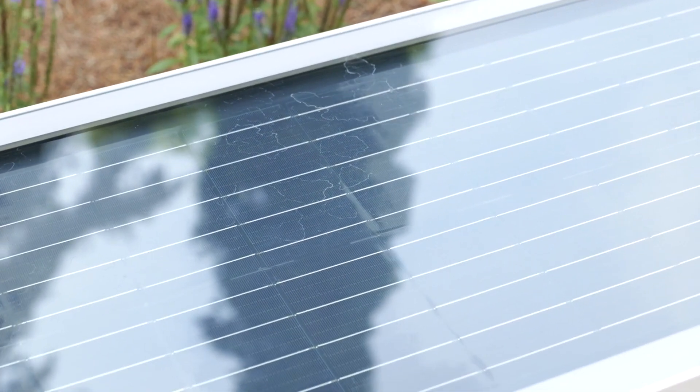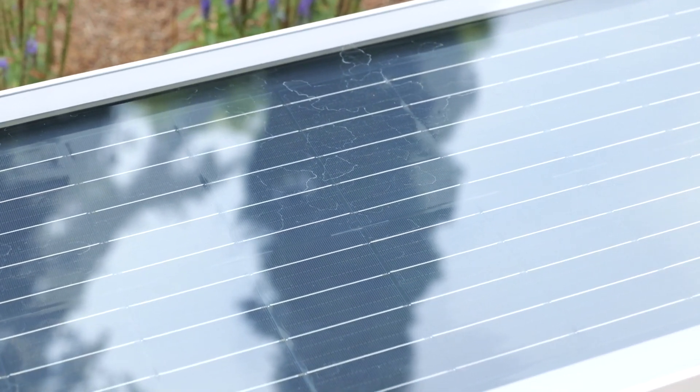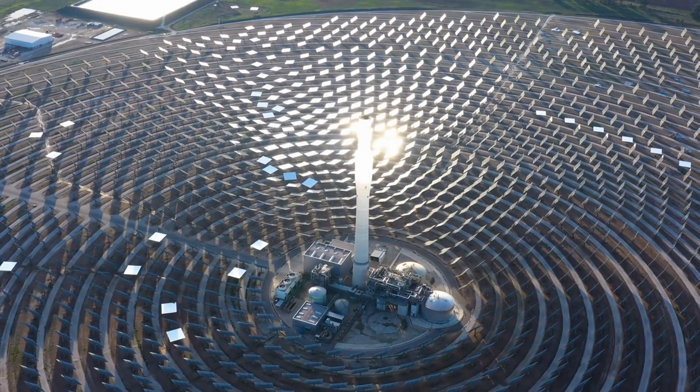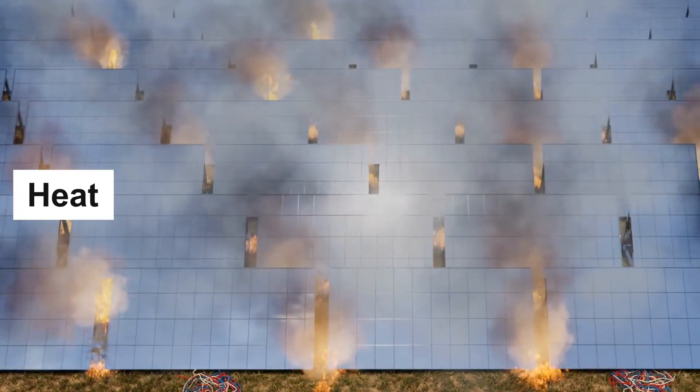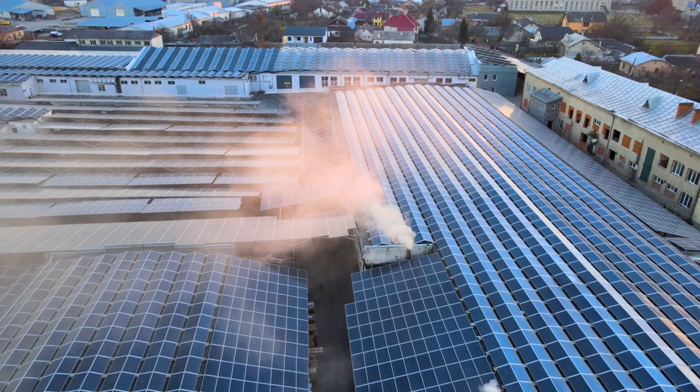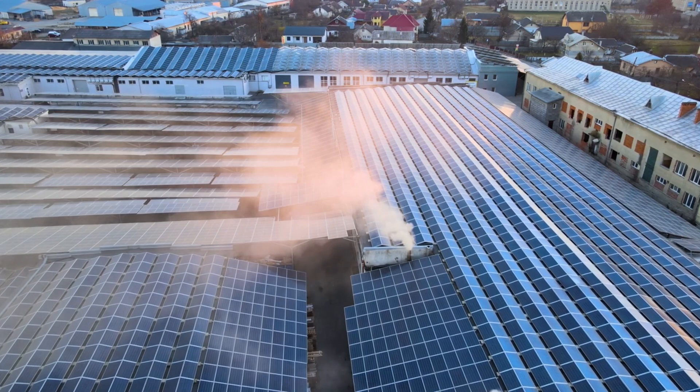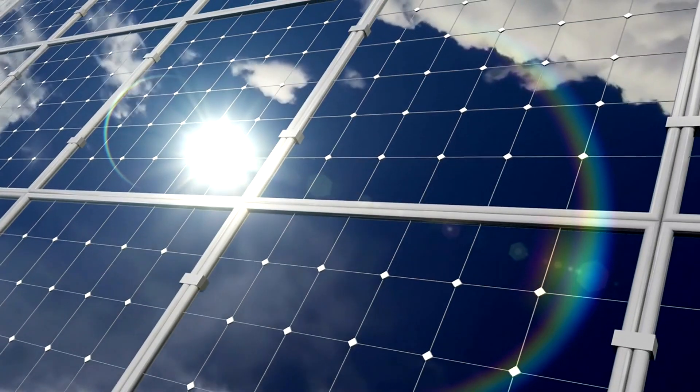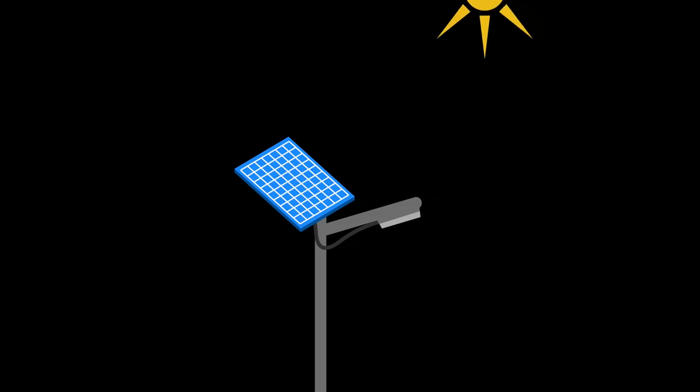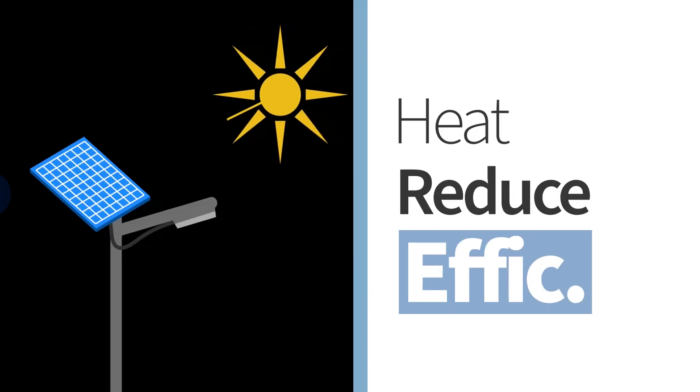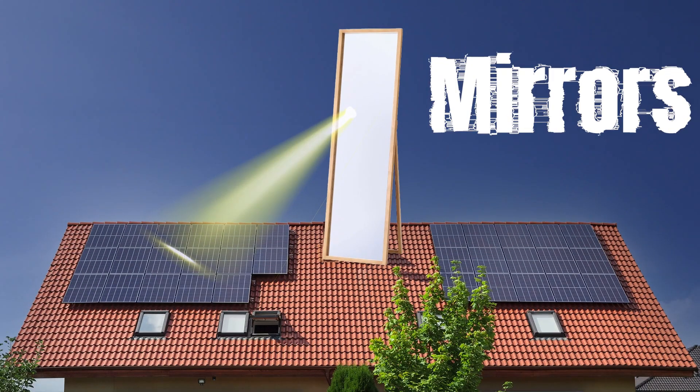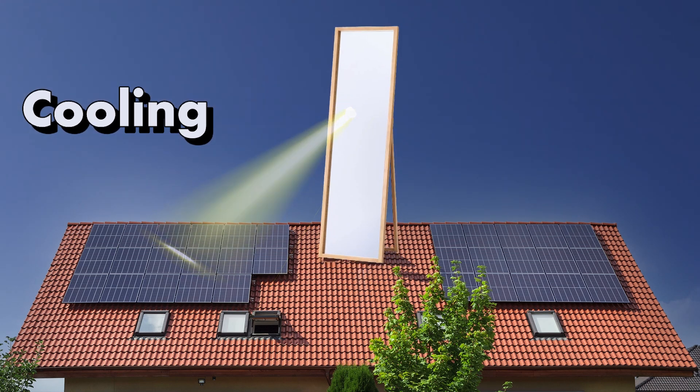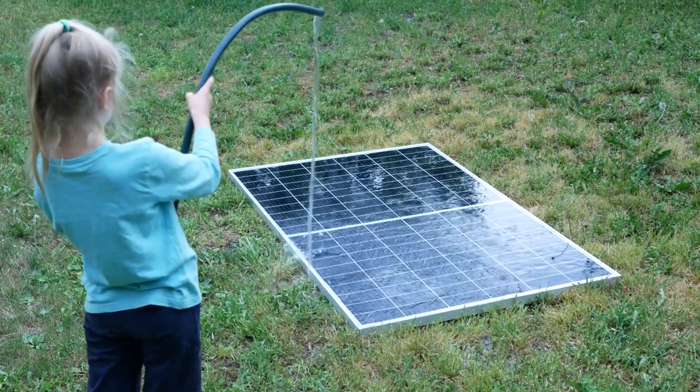But, as with any clever idea, there's a catch. While adding mirrors can increase the amount of sunlight your panels receive, it also comes with some challenges. One of the biggest issues is heat. When mirrors focus more sunlight onto the panels, they can cause them to overheat. Solar panels are designed to work best within a specific temperature range, and too much heat can actually reduce their efficiency, or worse, damage them permanently. That means if you're thinking about adding mirrors, you might need to consider cooling systems or heat-resistant materials to protect your panels.